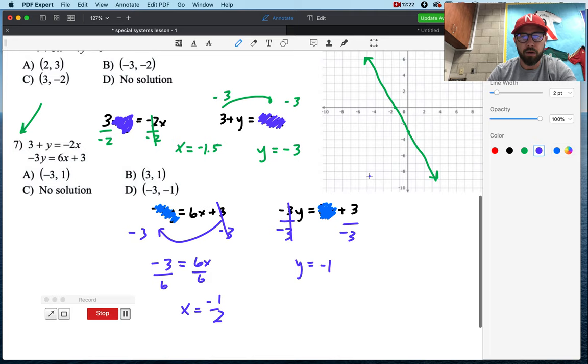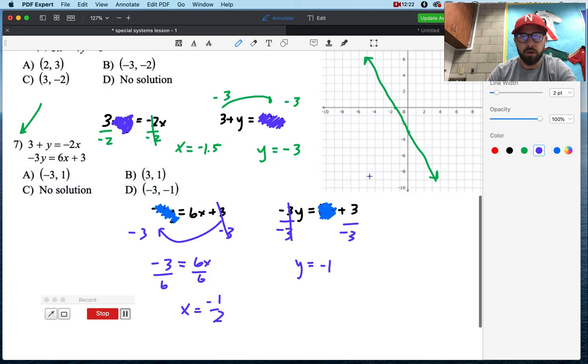So we have x equals negative 1.5. Well, that's right here. And we have y equals negative 1, which is right here. Here, I think, if I'm doing this one right, what's going on with these lines? Are they ever going to meet? I don't think so. They're not going to meet. So they're parallel. They're never going to intersect. So what does that say? That says we've got no solution.